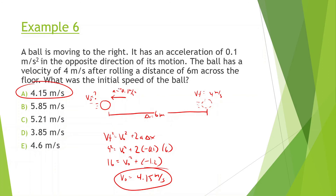It's important to get three variables identified. Once you have three variables and you know which variable you're looking for, find which equation to use in order to solve for the fourth variable.